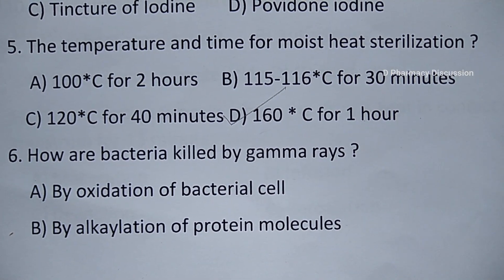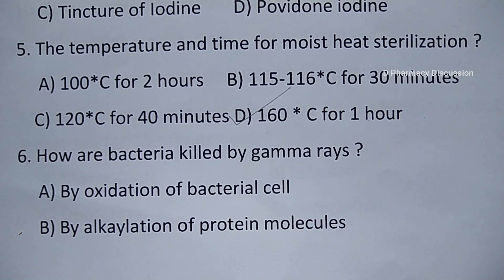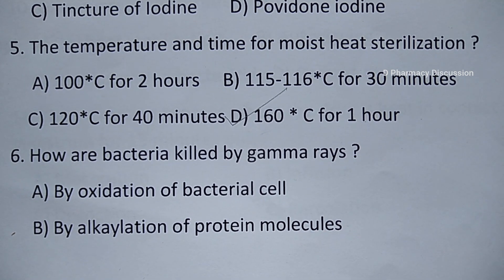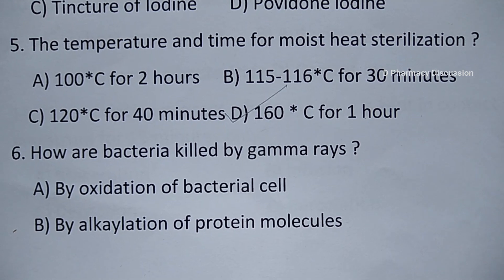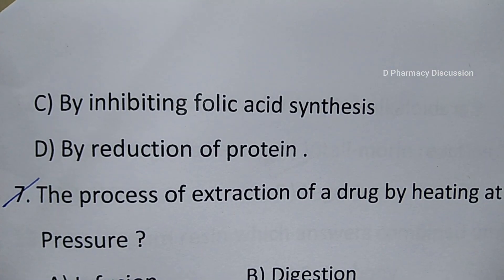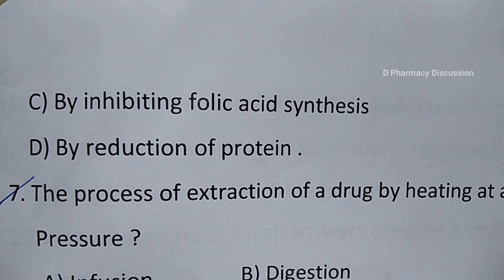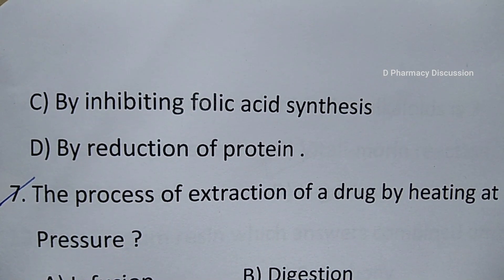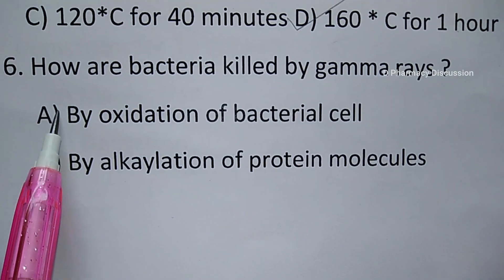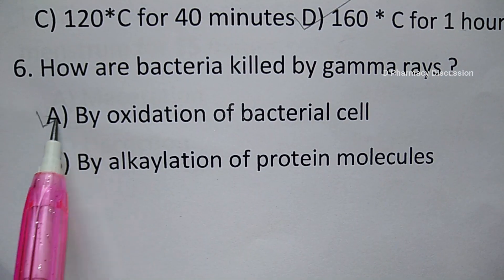Question number 6: how are bacteria killed by gamma rays? Option A. By oxidation of bacterial cell, B. By alkylation of protein molecules, C. By inhibiting folic acid synthesis, and option D. By reduction of protein. Correct answer is option A, that is by oxidation of bacterial cell.